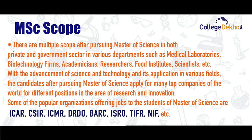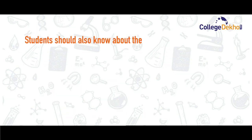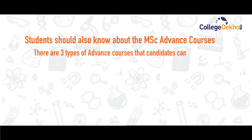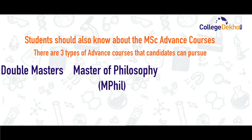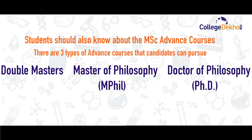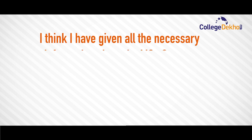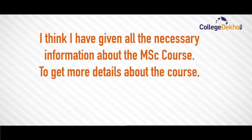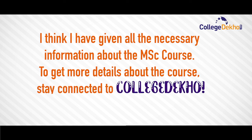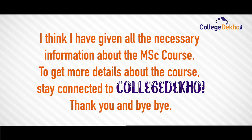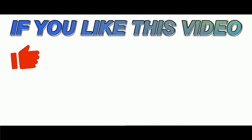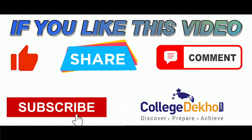Students should also know about MSc advanced courses. There are three types of advanced courses a candidate can pursue: double masters, Master of Philosophy, and Doctor of Philosophy (PhD). Apart from those, candidates can also choose any other field. I hope I have given all the necessary information about the MSc course. To get more details, stay connected to College Deko. Thank you and bye bye. If you like this video, do like, share, comment, and subscribe to our YouTube channel.